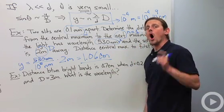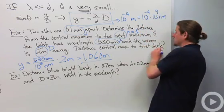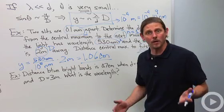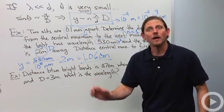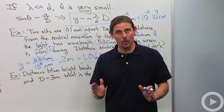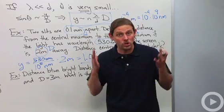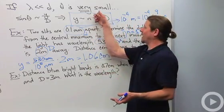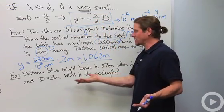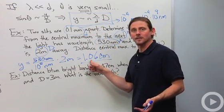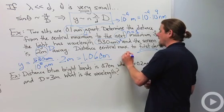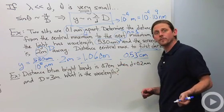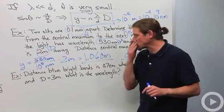What if we're looking to the first dark spot? Well, the first dark spot appears when d sin θ is equal to half of the wavelength, because now we'll be destructively interfering. So if I just cut the wavelength in half, that'll give me the answer. So all I have to do is divide this by two, so this answer will be 0.53 centimeters.